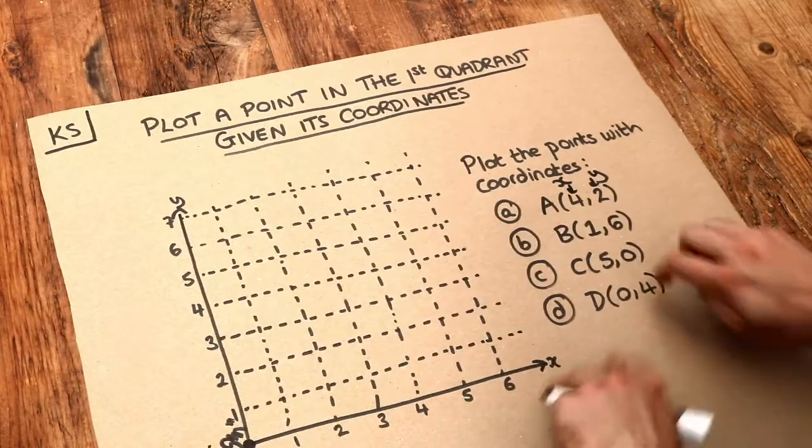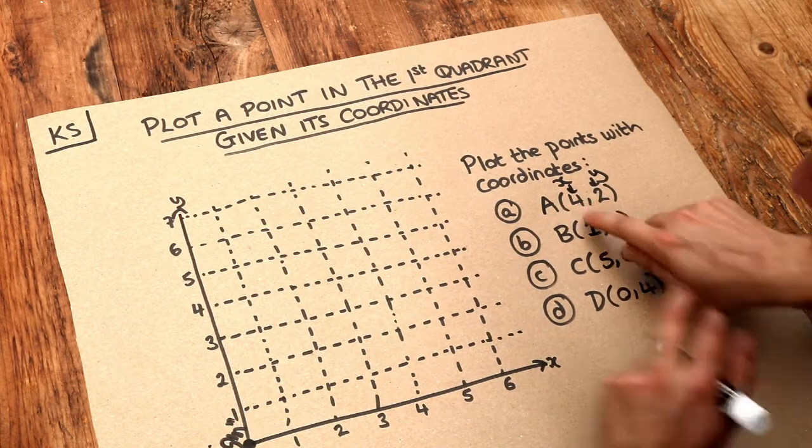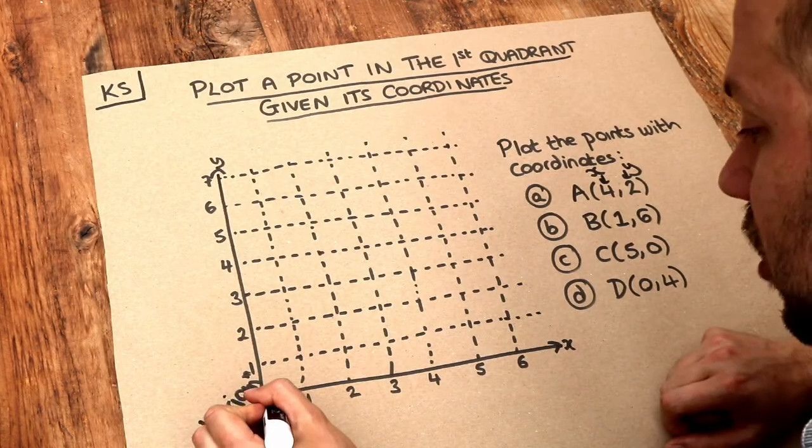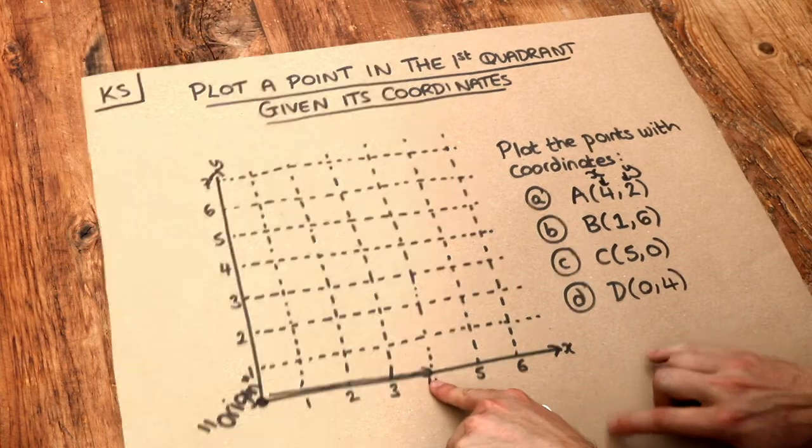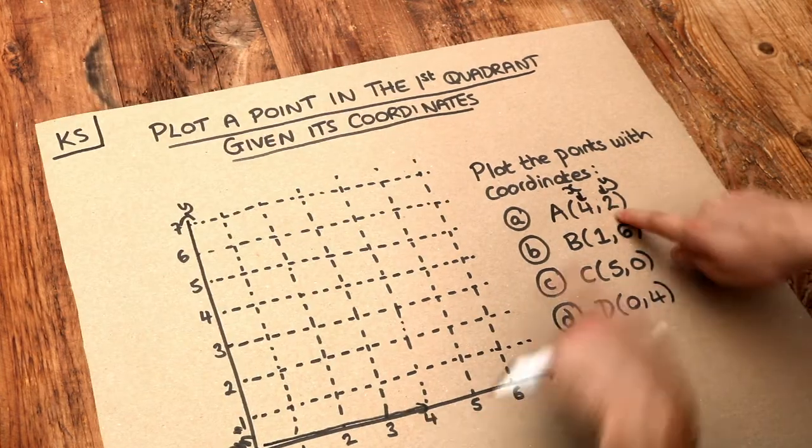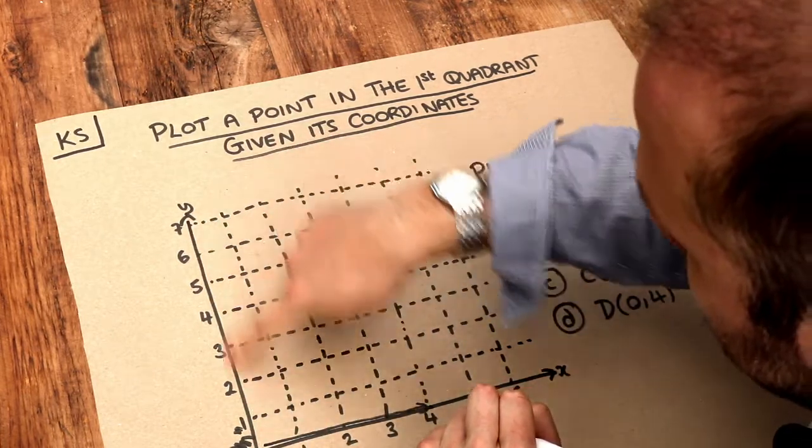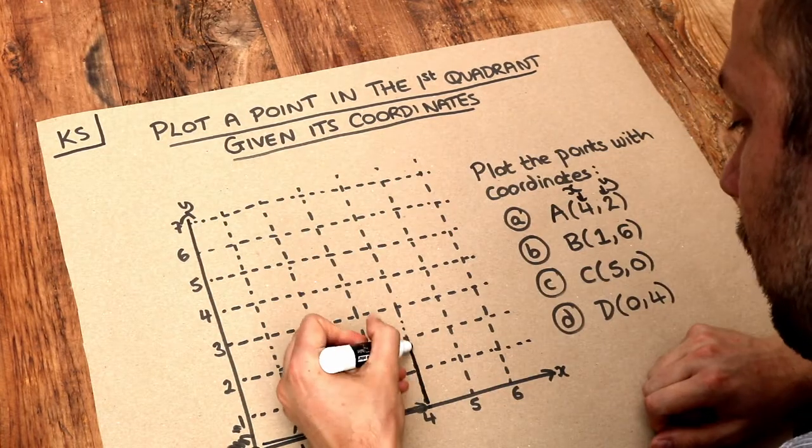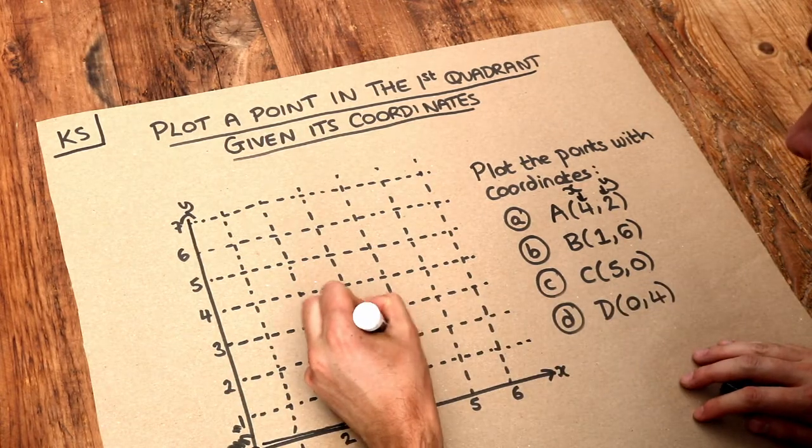So let's look at this. We've got point A (4,2). The x value is 4, so starting from the origin I'm going to go 4 along in the x direction, and then I need to go 2 along in the y direction. So I'm going to the 2 mark here, and therefore our point A is here.